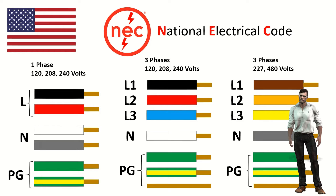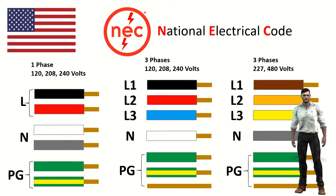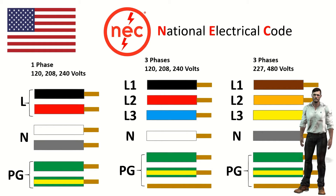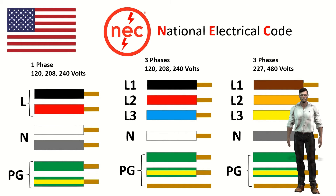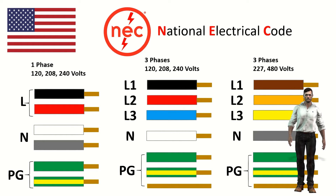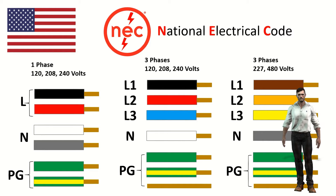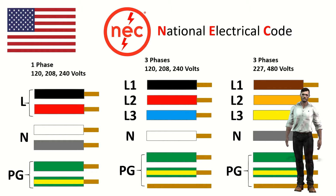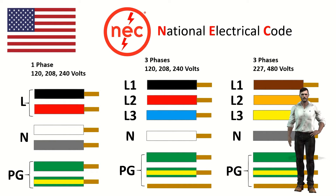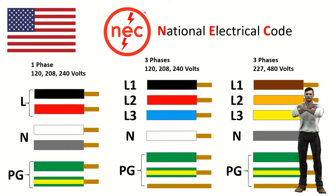Let's start with the United States. The National Electrical Code recommendations establish, for both AC and DC voltages, the color white or gray for the neutral grounded, and the colors green, green with yellow, or bare copper for the protection ground. Active cables can be of any other color except those already mentioned. For single-phase alternating voltage installations with nominal voltages of 120, 208 or 240 volts, typically used in residential and office installations, black or red is used for the line cable (L), white or gray for the neutral wire (N), and green or green with yellow for the protection cable or ground wire (PG).